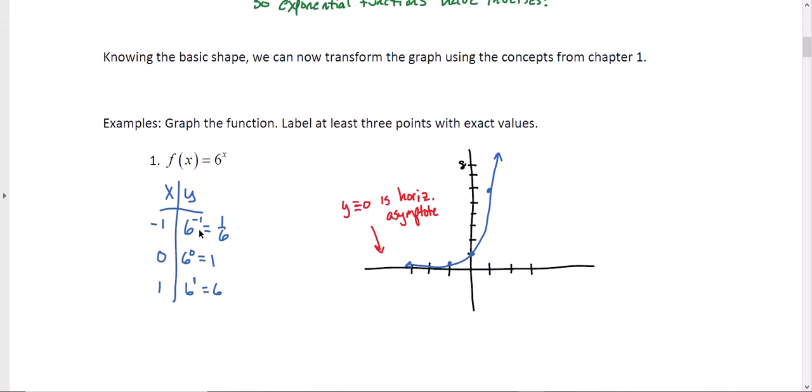If we put 6 to the -1, that negative 1 tells us reciprocal, so that's 1/6. 6 to the 0, anything other than 0 to the 0 power is 1. 6 to the first power is 6. And so we could plot these points as close as possible.